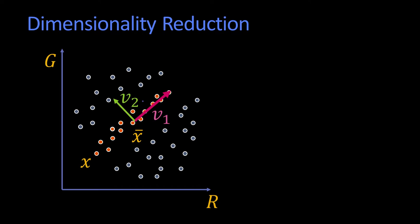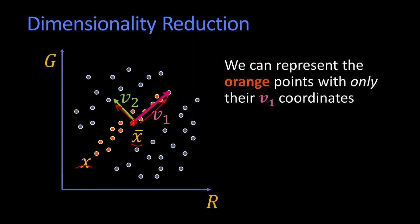So here you're seeing the points, the orange points are x. x bar here is supposed to be their mean. And then we've got the big eigenvector v1, and then the smaller one v2. And the idea is we can represent those orange points by only their v1 coordinates plus the mean.